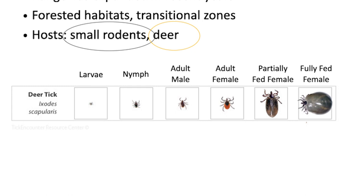Audience member: Can that tiny larva bite and carry disease? Speaker: Yes, it can bite. This stage does not carry disease as highly as the other stages because it hasn't necessarily fed on the host for the bacteria, but it's possible. If they've fed on a mouse or a chipmunk and picked up the bacteria, they are able to transmit it. Then you have the nymphal stage — about the size of a poppy seed, very tiny. They're black, so it can look like a freckle. Then you have the adult stage, about the size of a sesame seed — a little bit easier to see. When they're feeding they get a lot bigger; their abdomen expands. All the way on the right is a fully fed female, so a really engorged body.